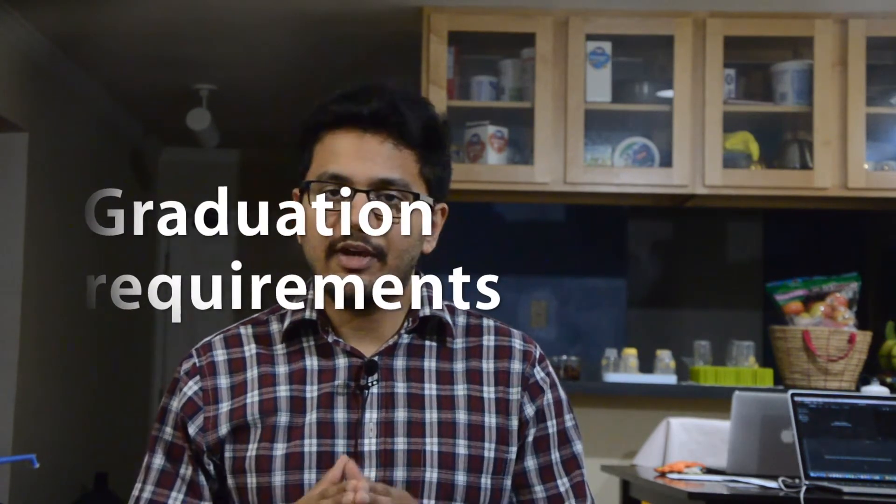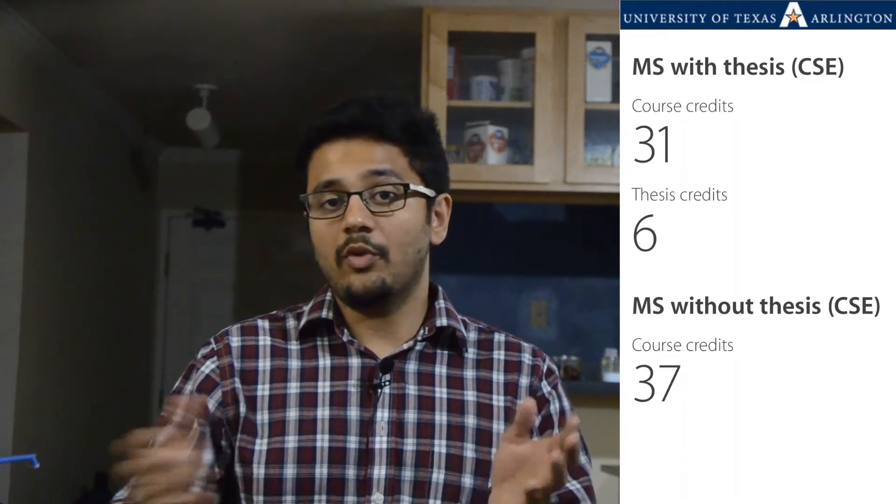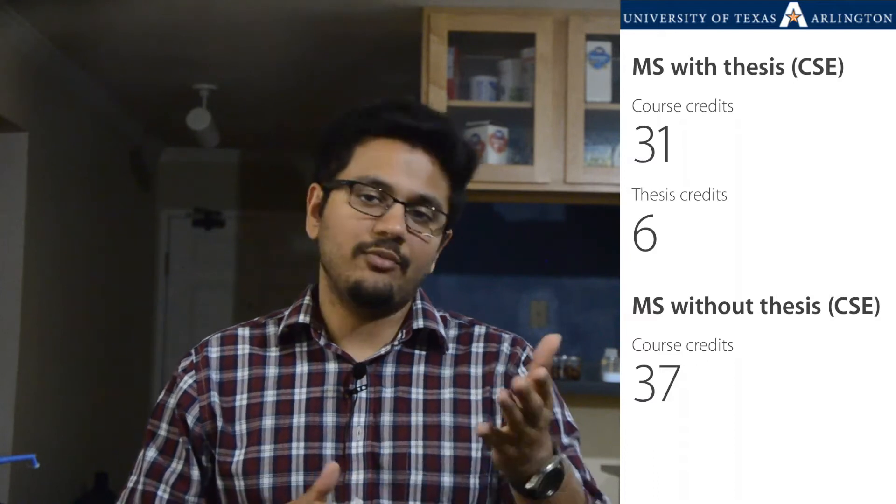All right, let us first talk about graduation requirements. Now let me give you an example here. Say that you want to do your MS without thesis, also called as MS coursework only option, at the University of Texas Arlington. And say that you are a computer science student, then you need 37 credits in total to get your degree certificate.